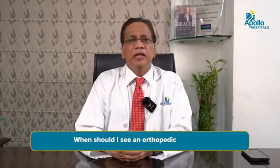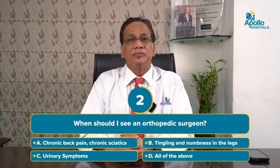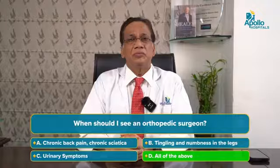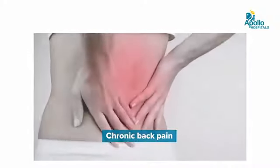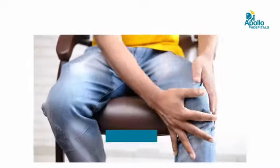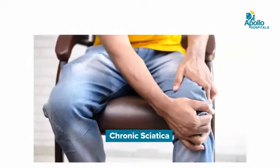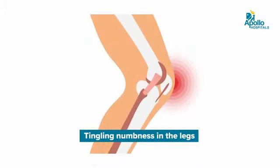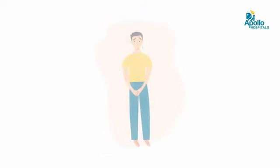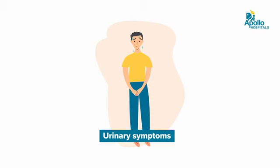When should you see an orthopedic surgeon? When the back pain is not going away, maybe in a week or two. Or if you are getting leg pain — that is sciatica — which is also not going away. If you get any tingling or numbness in the legs, any weakness, and especially if you get any urinary symptoms such as incontinence — if you are not able to hold your urine — you must see the doctor immediately.